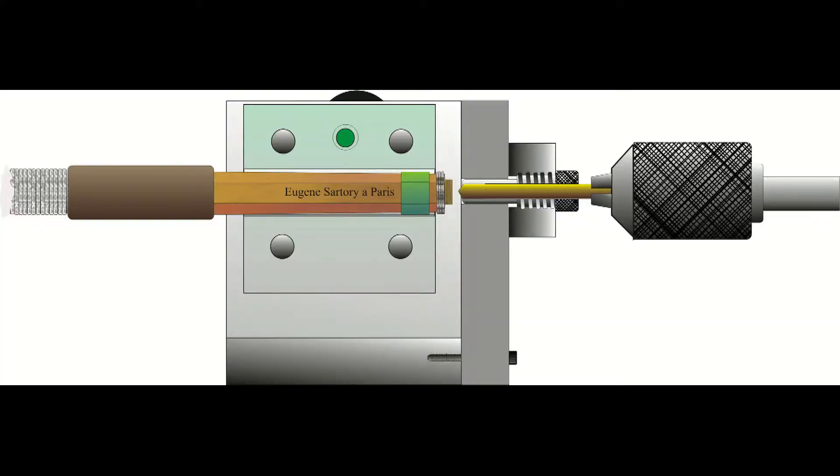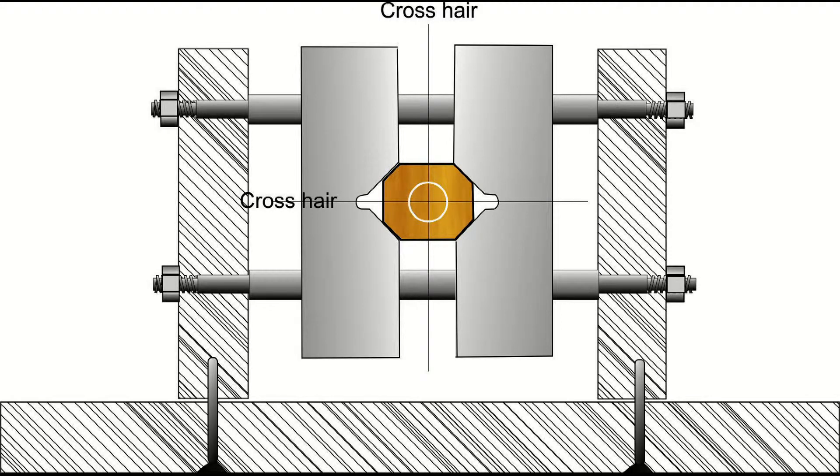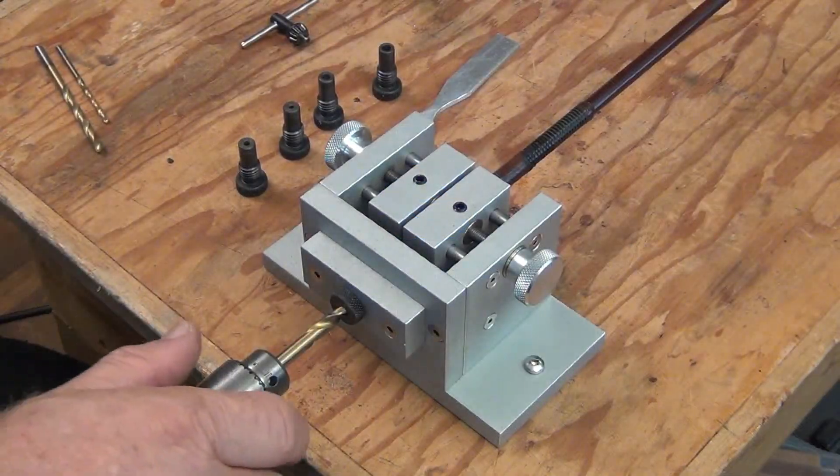Next, use a drill bit and collet that allows some wood to be removed, and drill into the butt for a millimeter or so, and remove the bow for inspection. Your eye will tell you if centering is achieved. Some fine adjustment is still possible.